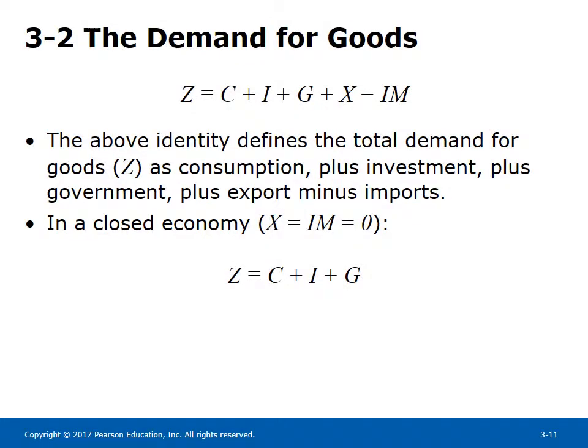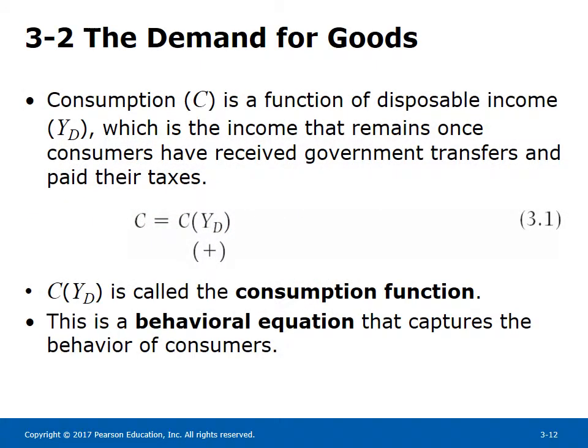The demand for goods Z equals C plus I plus G plus X minus IM. This identity defines total demand for goods Z as consumption plus investment plus government spending plus exports minus imports. In a closed economy, X equals IM equals 0, so Z equals C plus I plus G. Consumption C is a function of disposable income, which is the income that remains once consumers have received government transfers and paid their taxes. Equation 3.1, C equals C(YD), is a behavioral equation that captures the behavior of consumers. The plus sign indicates consumption varies positively with disposable income.